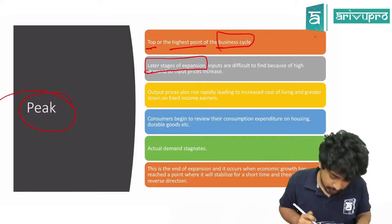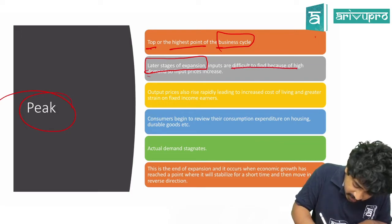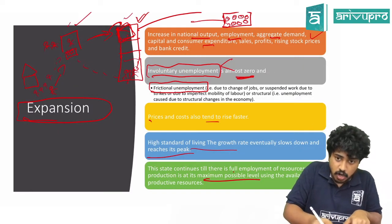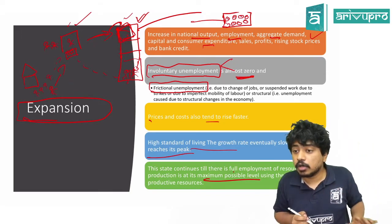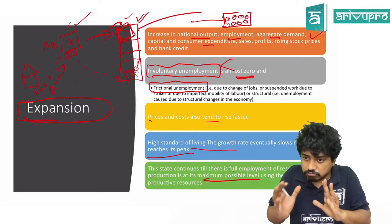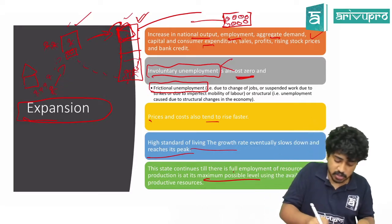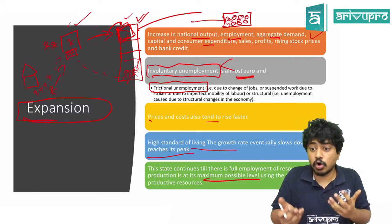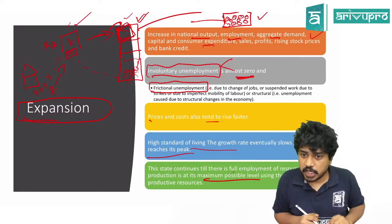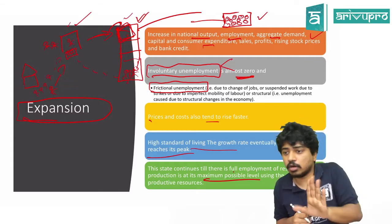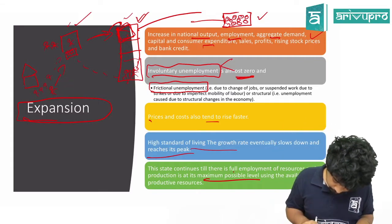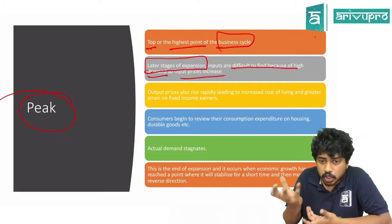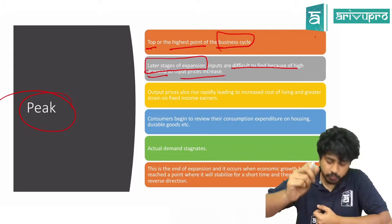At peak, inputs are difficult to find because of high demand and input prices increase. The cheta shop is buying all raw materials from the corporate, who buys from agriculture. Agriculture has limitations — you can't keep growing coffee or tea indefinitely. Demand keeps increasing but supply is stopping — it's not enough. So the raw material price will increase.